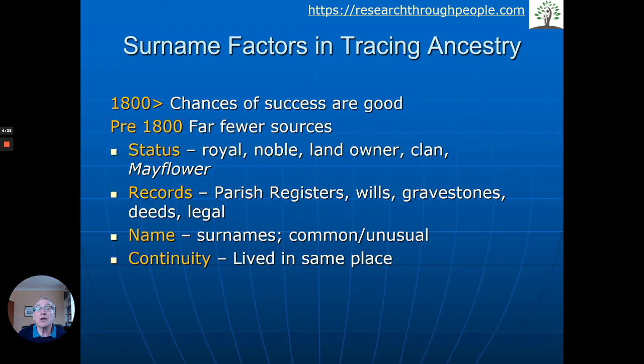Wills can also be available going back in time, and gravestones — it's interesting how often we find a 300-year-old record of someone on their gravestone. There have always been deeds and legal papers that may contain your ancestor's record. Obviously the surname you have matters: if you have an unusual surname, it's much more likely one can trace and confirm it's the right person, whereas with a name like John Smith, knowing you've found the correct record is far more difficult. And did they live in the same place? Before the industrial revolution, people did tend to stay in the same place, so a surname recurring again and again in a particular area is a strong clue.